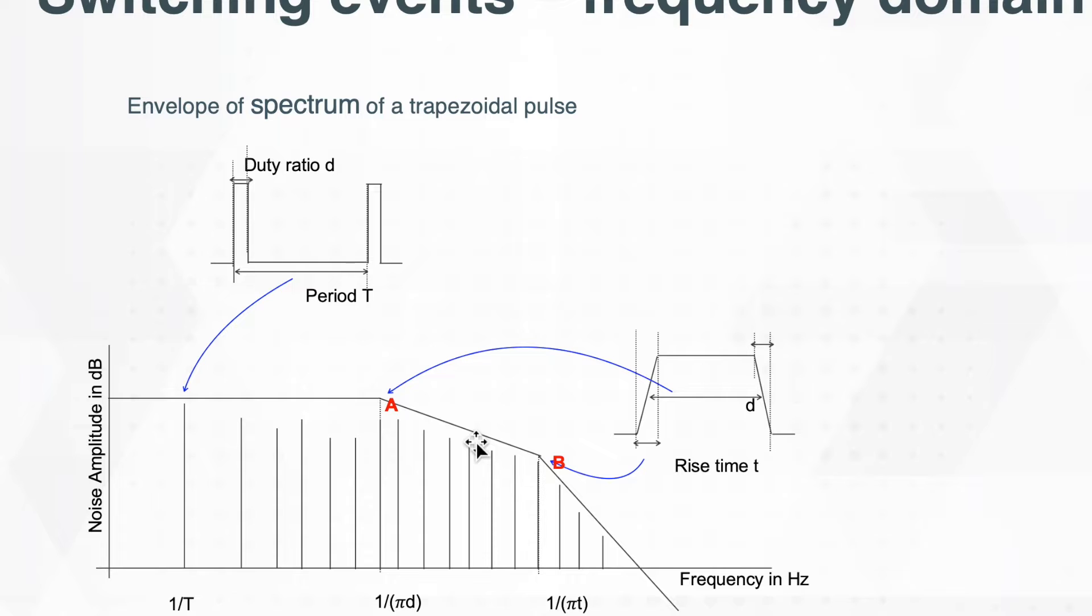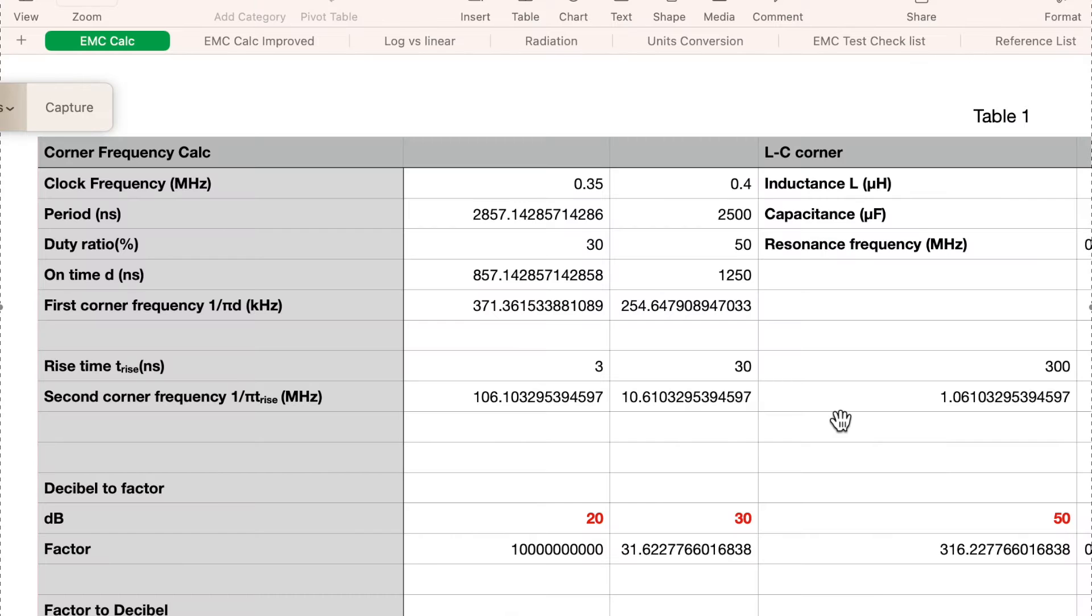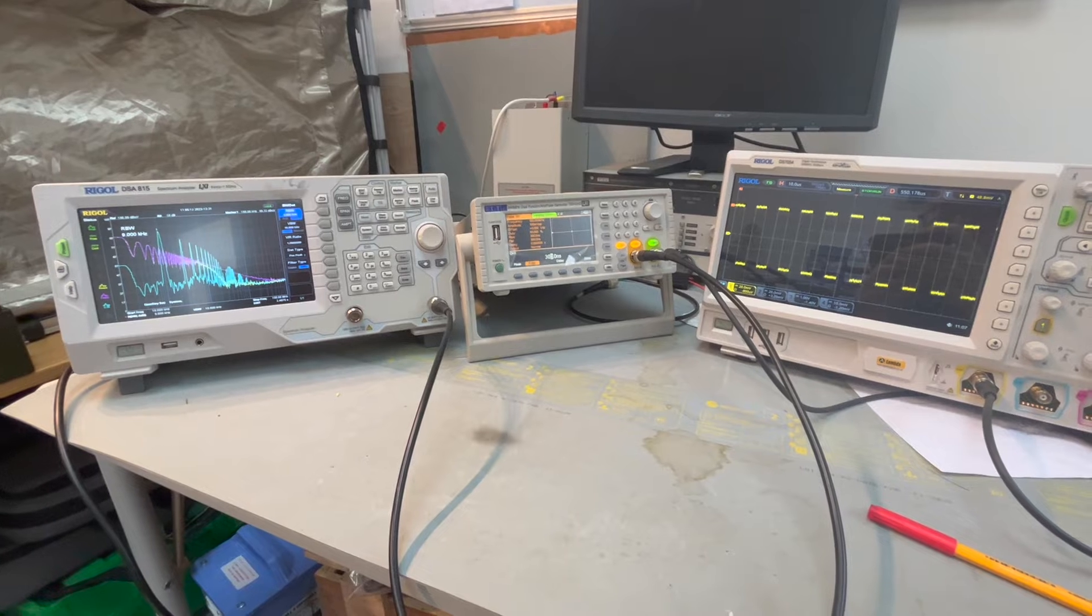If we have 300 nanoseconds rise time, we expect that point B sits at 1 MHz, whereas if we have 3 nanoseconds rise time, it will be somewhere around 106 MHz.